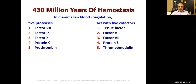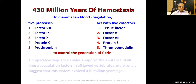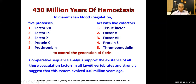We have cofactors known as tissue factors: factor 5, factor 8, protein S, and thrombomodulin. The overall outcome of all this is the generation of fibrin, which eventually causes clotting. We keep this under strict control — we don't want unnecessary clotting, but we want clotting when it is needed. Comparative sequence analysis supports the existence of all these coagulation factors in all jawed vertebrates, strongly suggesting this system evolved 430 million years ago. It has been conserved in evolution because it is very important for survival.